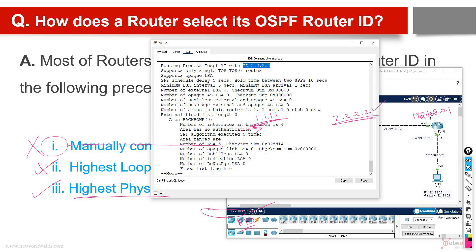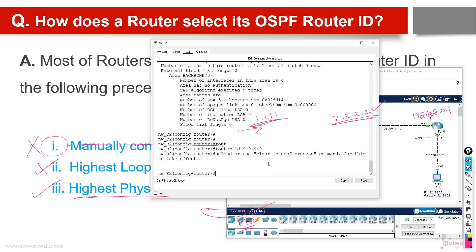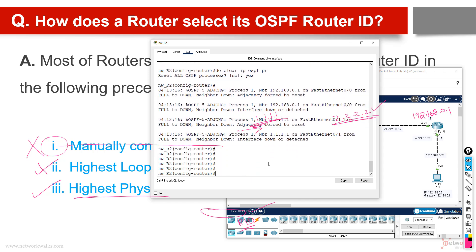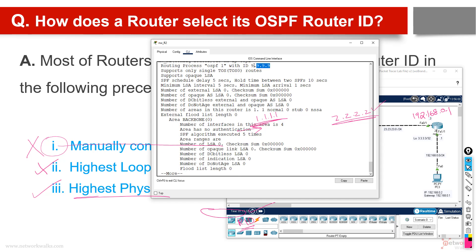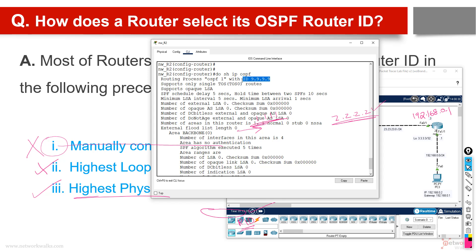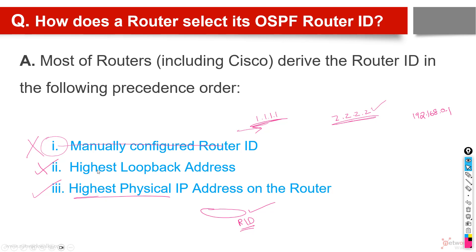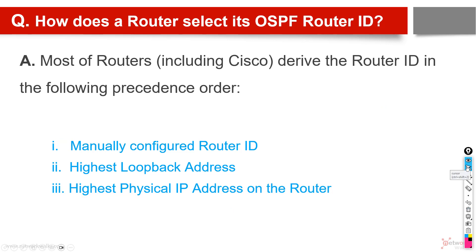In case we want to manually configure and override, we can change the router ID. For example, type router-id 9.9.9.9, then do clear ip ospf process, confirm yes, and then do show ip ospf. Now you can see the router ID is 9.9.9.9. Every time we make a change to OSPF, we have to clear the process once — like a reset. This router followed rule one — manually configured. So to summarize: first check manual configuration, then highest loopback, then highest physical IP. These are the three simple rules.